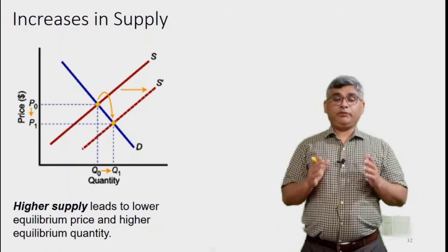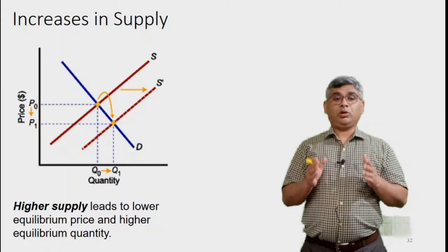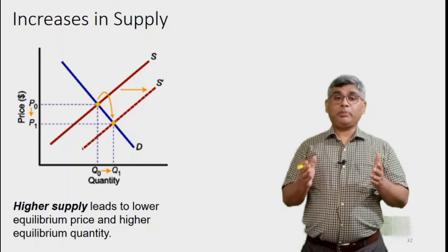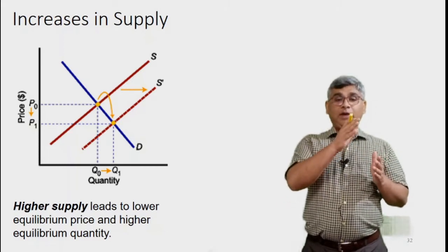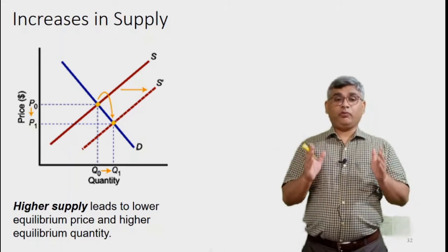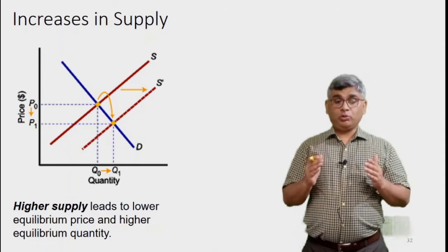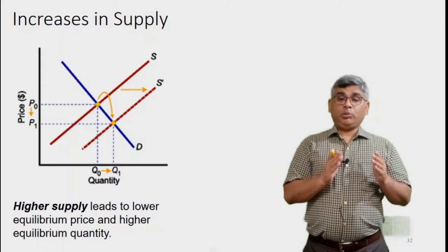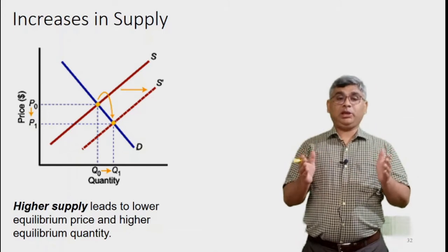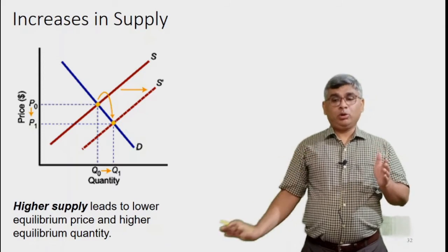In another situation, if the demand curve remains the same and supply increases — the supply curve shifts from S to S' — the law of supply and demand states the price will fall. At the new equilibrium, price reduces from P0 to P1 and equilibrium quantity increases from Q0 to Q1. Simply put, higher supply leads to lower equilibrium price and higher equilibrium quantity.